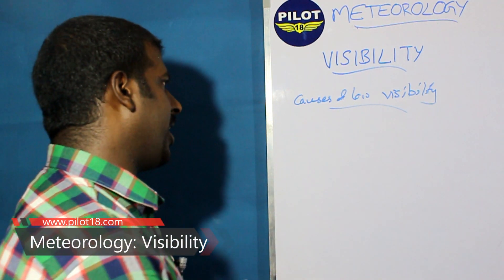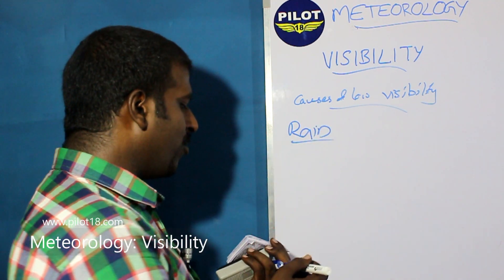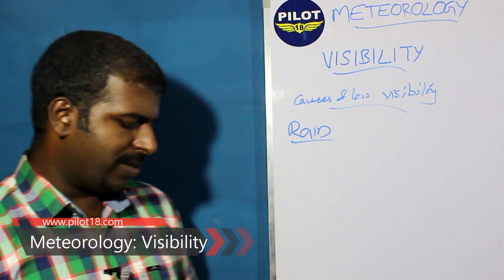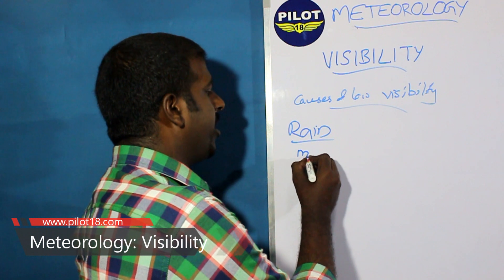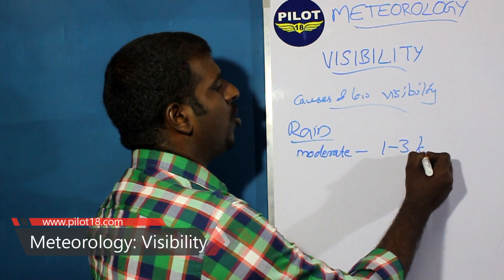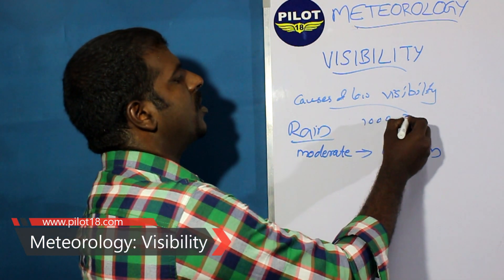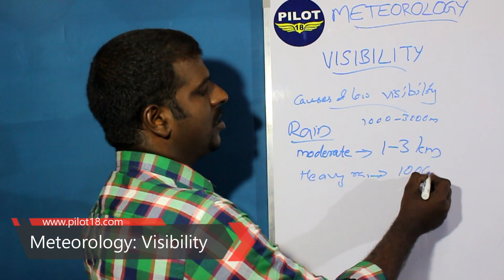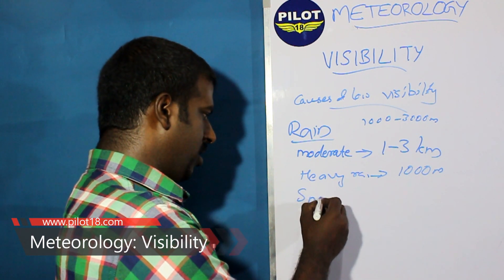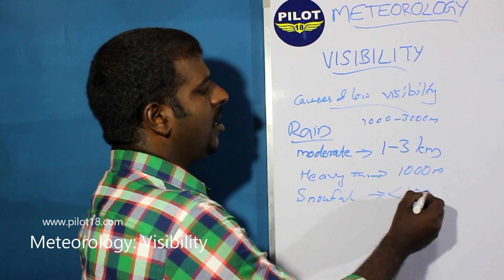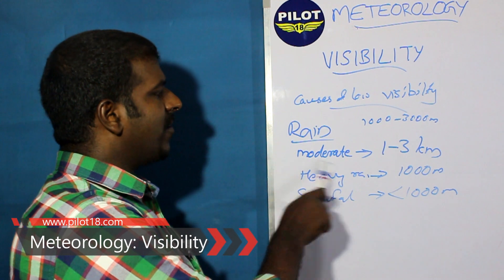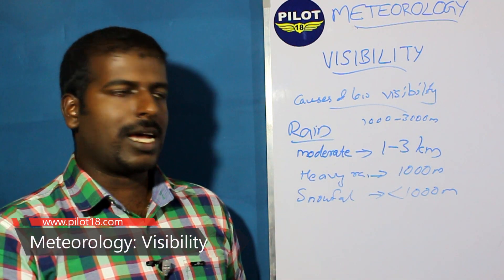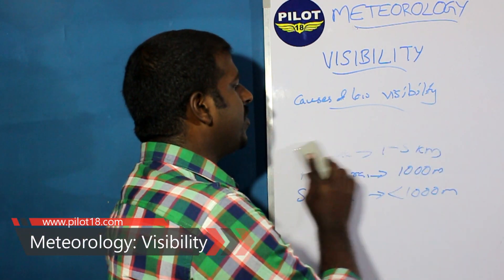Rain and precipitation are important causes of reduced visibility. Aircraft have been diverted to alternate airports due to rain-related low visibility. During moderate rain, visibility is around 1 to 3 kilometers (1000–3000 meters). During heavy rain, it drops to 1000 meters or less. During snowfall, visibility will be less than 1000 meters.